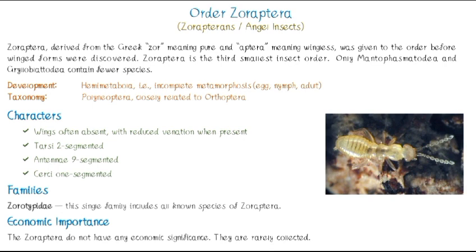Zoroptera is the third smallest insect order. The first smallest insect order is Grylloblatodea, and the largest insect order is Coleoptera, but Zoroptera is the third smallest insect order.